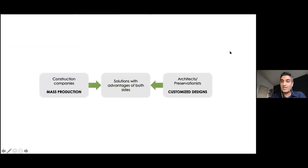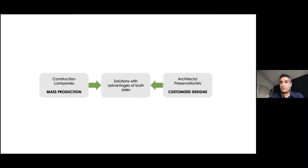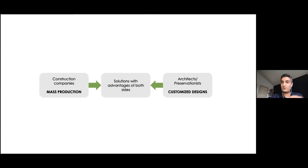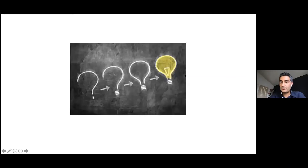In closing, what I'm doing or what I'd like to do is on this last slide. Architects and preservationists want customized design; construction companies and the building industry want mass production. I'm looking for a solution that can take advantage of both sides — customized ideas from architects and preservationists, and ideas from mass production or faster production that can help construction companies to participate. I would be happy to answer questions or hear your comments. Thank you.